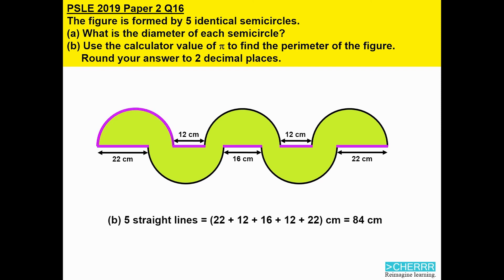Next, we will have to add the 5 semicircles. Now, we know a semicircle formula is half times pi times d. Alright, so 5 semicircles will become 5 multiply by half, multiply by pi, multiply by 36. That will get us 90 pi centimeters.